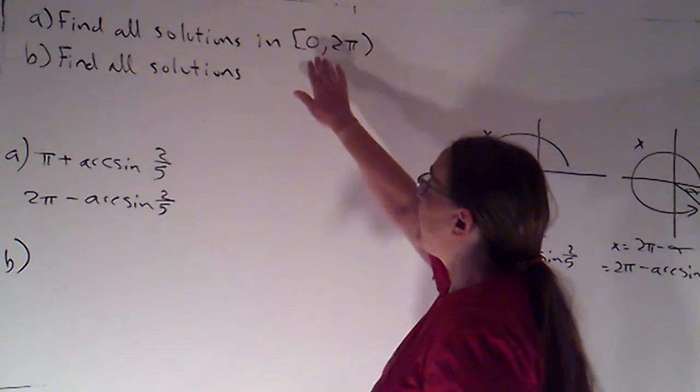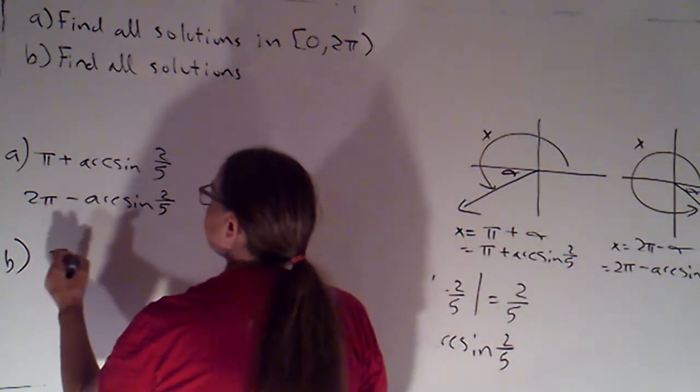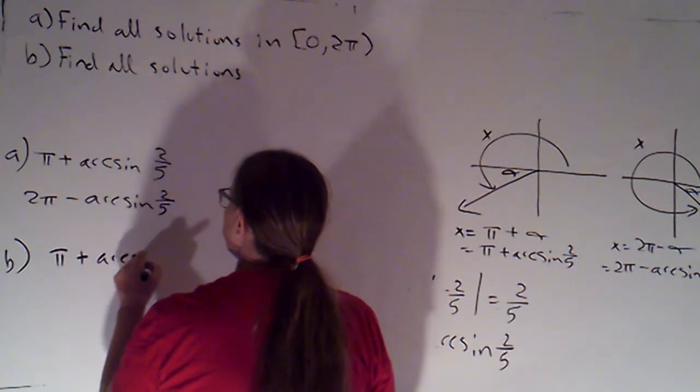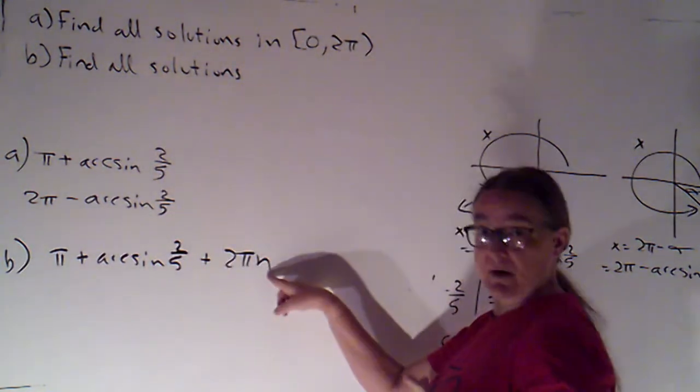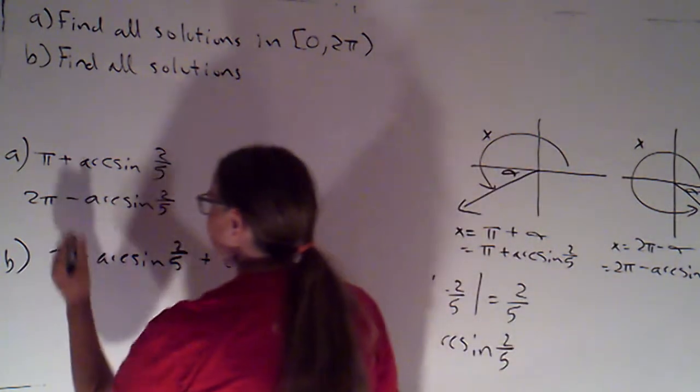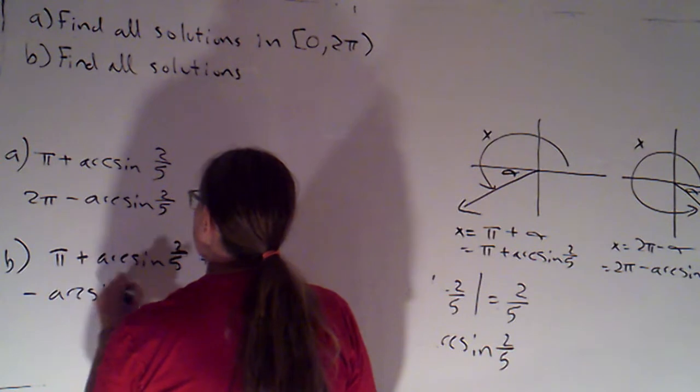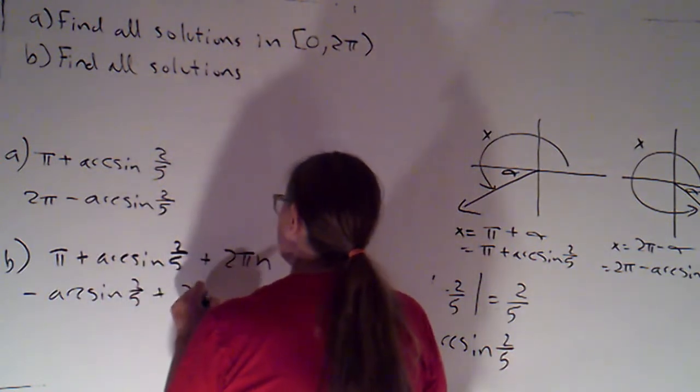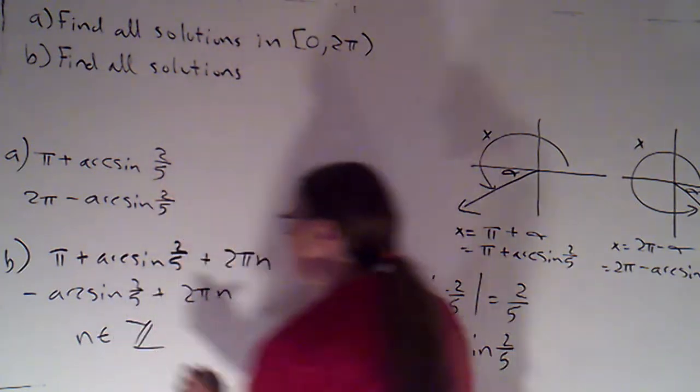Excellent. For part b, to find all solutions, I'm just going to say it's π plus arc sine of 2 fifths plus 2πn. In a moment, I'm going to specify that n is an integer. And then here, I can just say negative arc sine of 2 fifths plus 2πn. In both cases, n is an integer.